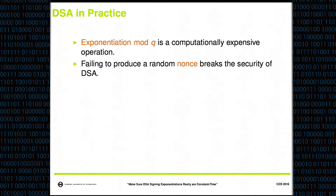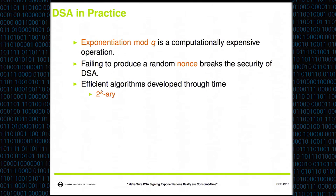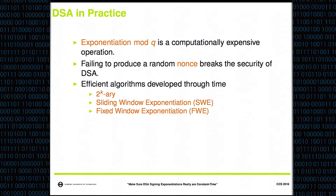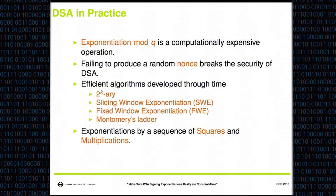Exponentiation mod Q is a computationally expensive operation, and failing to produce a random nonce breaks the security of DSA, as Daniel mentioned. We need efficient algorithms to compute this operation. Through the years there have been different algorithms: square-and-multiply, then sliding window exponentiation, fixed window exponentiation, and the Montgomery ladder. Basically most of them reduce the exponentiation to a sequence of squares and multiplications. But not all of these algorithms are constant-time — they're not cache-timing safe.